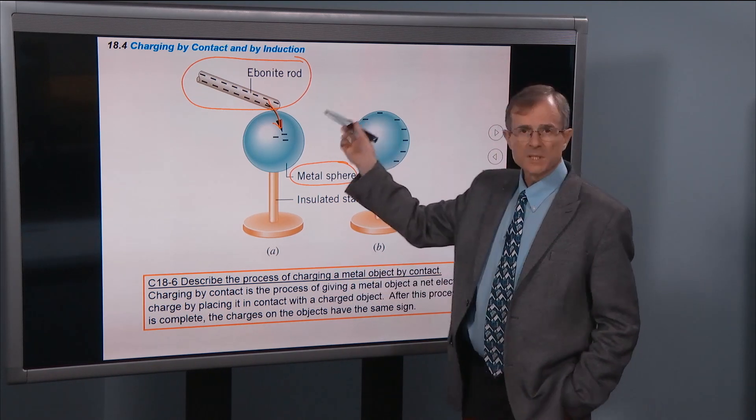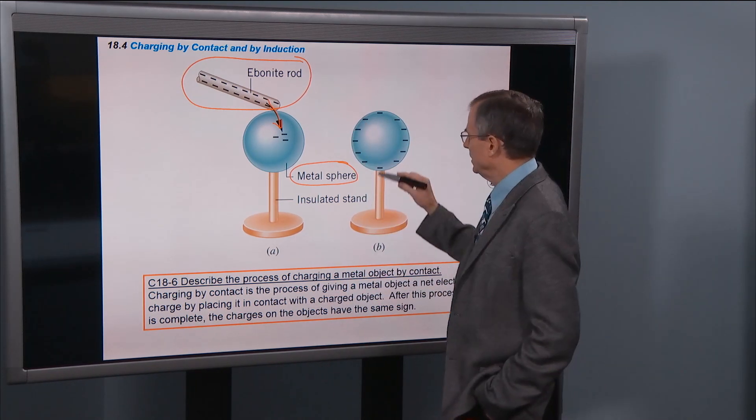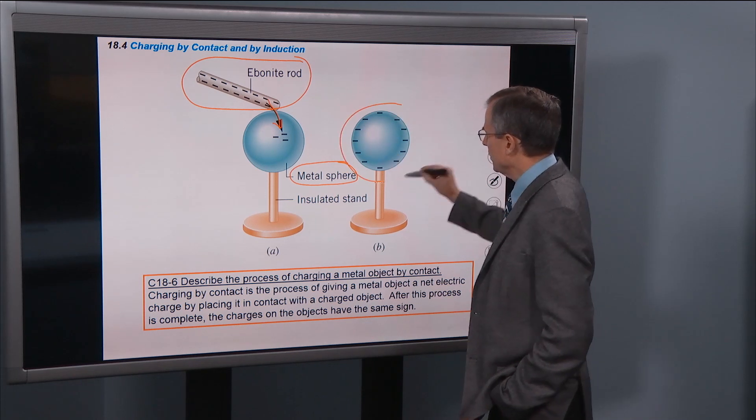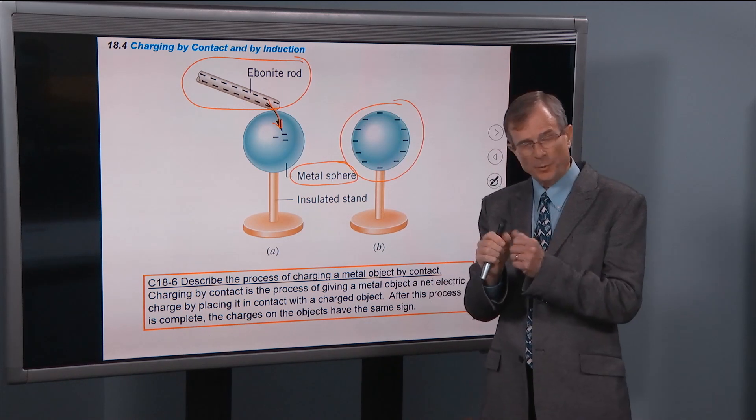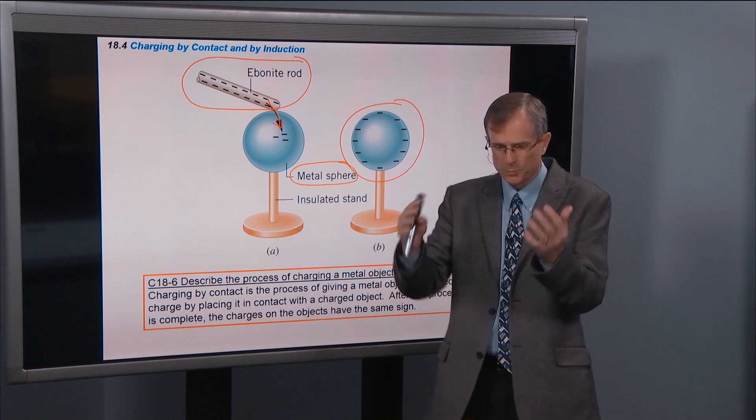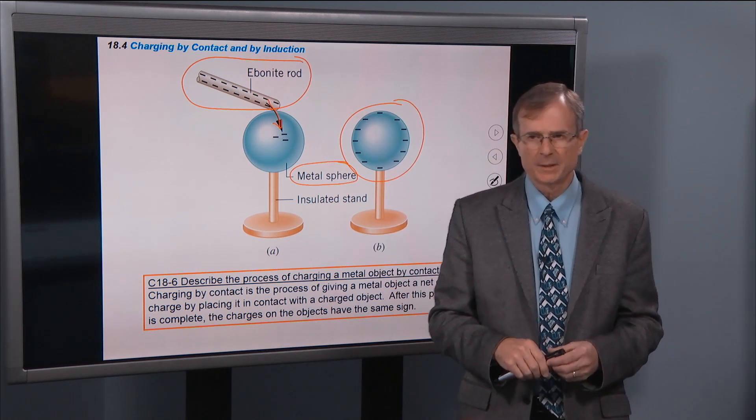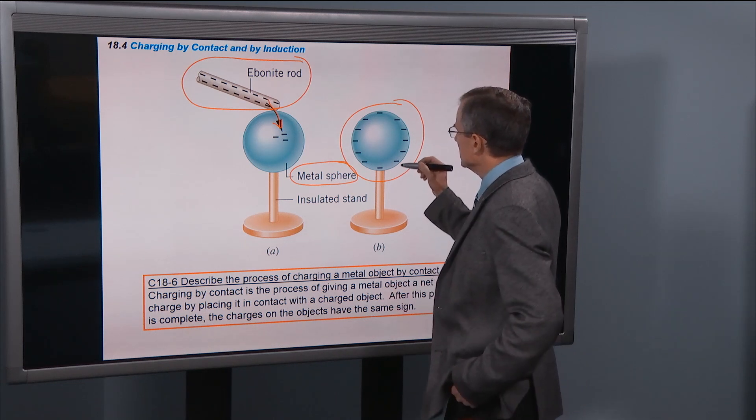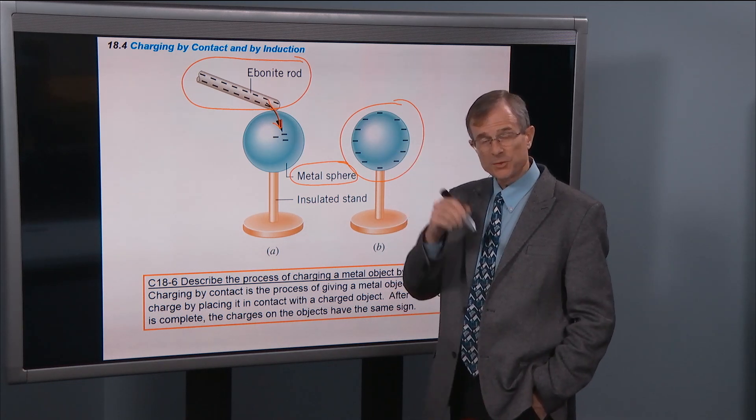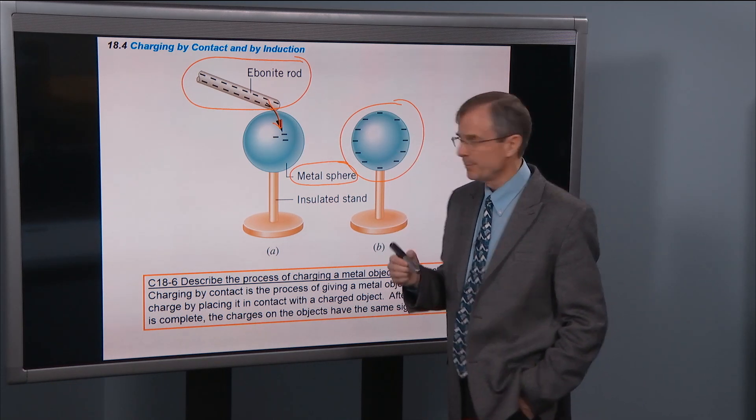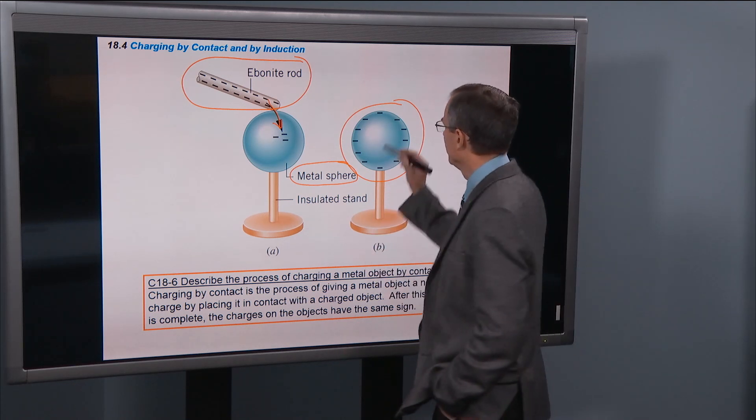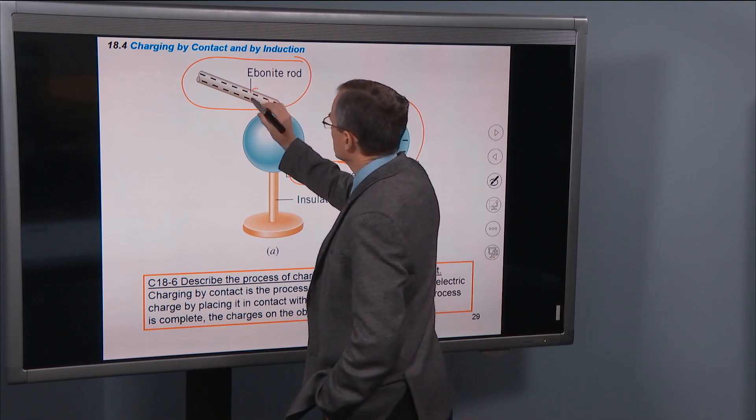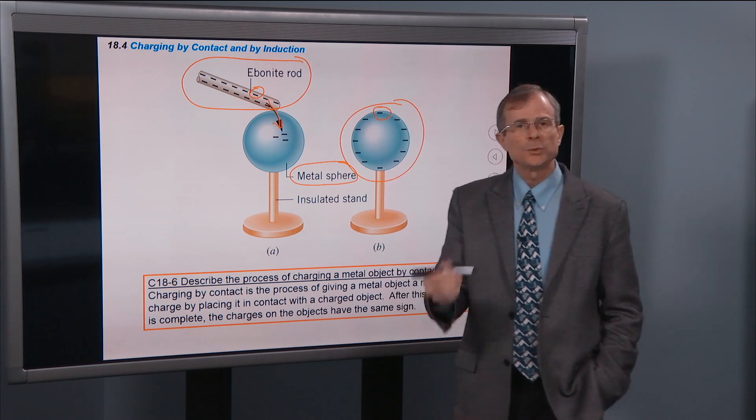And then once that rod is removed, those electrons will spread around the outside because they're repelling each other. They don't want to all be in the same place so they'll spread over the surface of that sphere. And at the end of the day, the metal sphere has charge of the same sign, meaning negative, as the charged object that you touched it with.